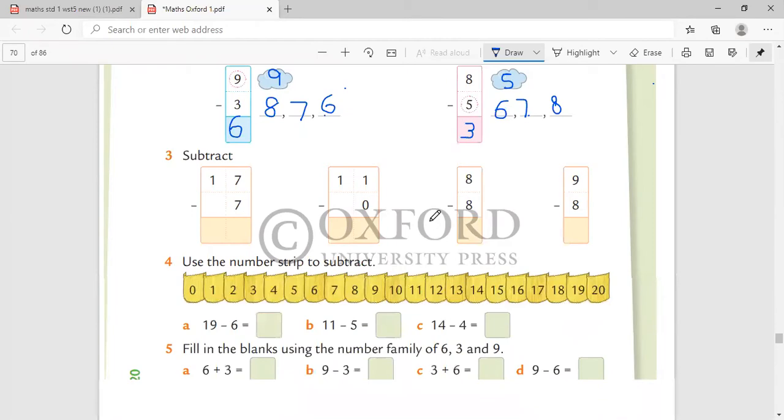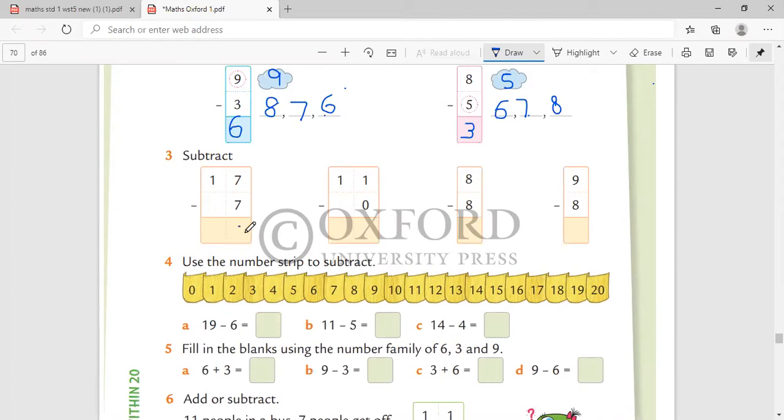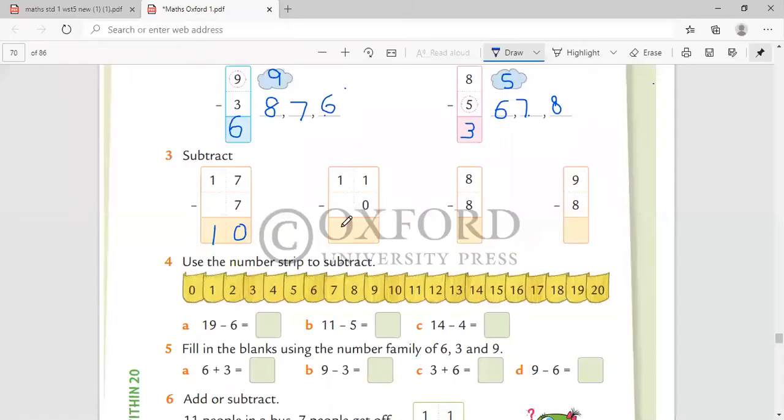Subtract. This you should be able to do. I'll only do two. 17 minus 7. First, once we will minus seven minus seven, zero. One gets carried forward down. Ten. And once you are doing this, give me one minute. Now, 11 minus zero. When nothing is getting subtracted, answer is 11. You will do the remainder of two.